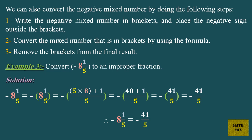Therefore, minus 8 and 1 fifth equals minus 41 over 5.